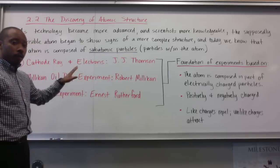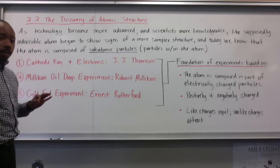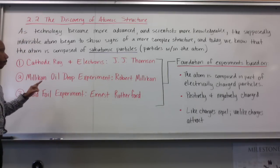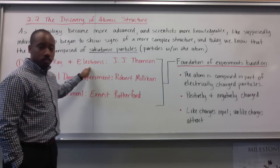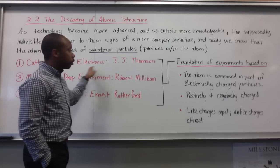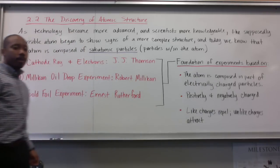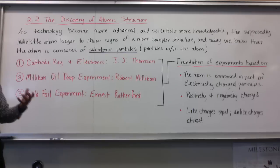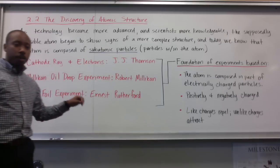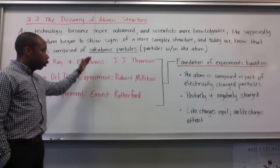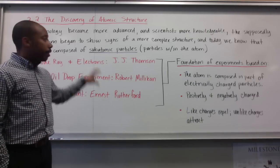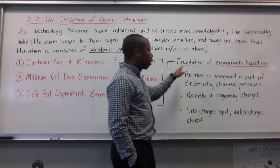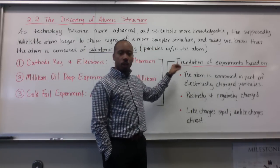We've learned of the particles in the atom through three major experiments. The first is the cathode ray experiment, which helped determine what an electron was — done by J.J. Thomson. The second experiment was the Millikan oil drop experiment, done by Robert Millikan. The third experiment was the gold foil experiment, done by Ernest Rutherford. Next class, we'll go through how these experiments were laid out, what the procedure was, and what the findings were.